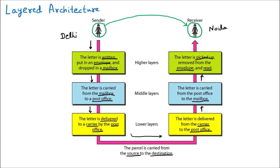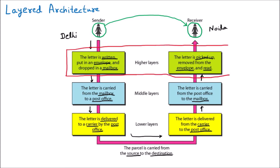Every layer has its own responsibility. Looking at the layers, we have three working layers. The top layers on both sides are closest to the user — the sender and receiver both interact with this layer. Because users interact here, this layer is called the higher layer or upper layer.